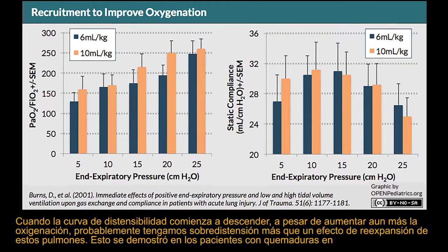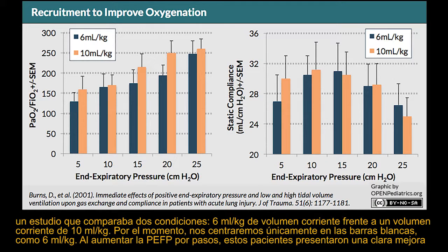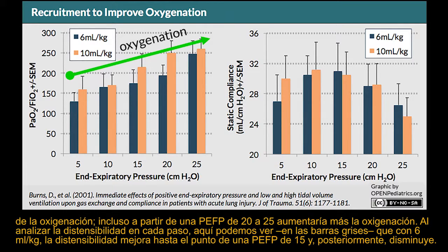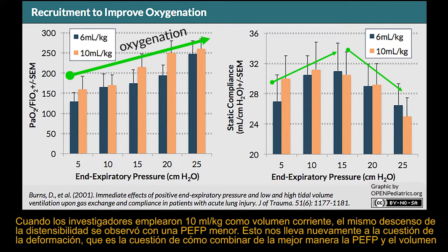The same was shown by Burns in patients comparing 6 versus 10 mL per kilogram tidal volume. Focusing on the 6 mL/kg group: by increasing PEEP stepwise, oxygenation clearly improved, and even going from 20 to 25 cmH2O of PEEP further increased oxygenation. But compliance improved only up to a PEEP of 15 and then dropped. With 10 mL/kg tidal volume, the same compliance drop was observed at a lower PEEP. This important finding brings us back to the question of strain—the combination of PEEP and tidal volume and how to optimize this combination.